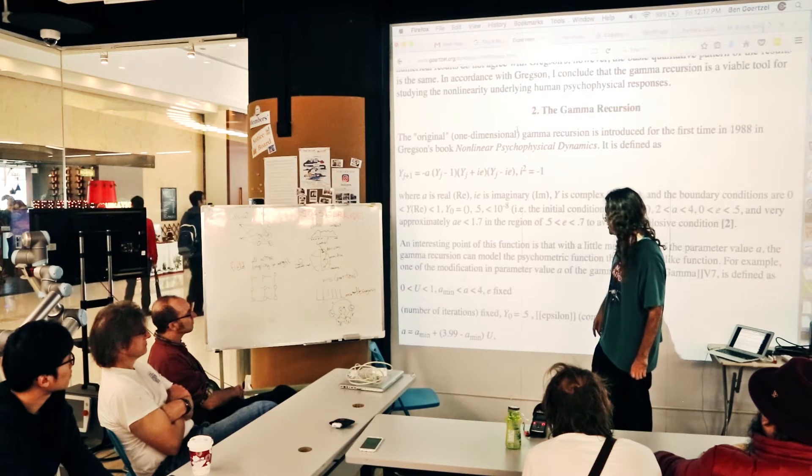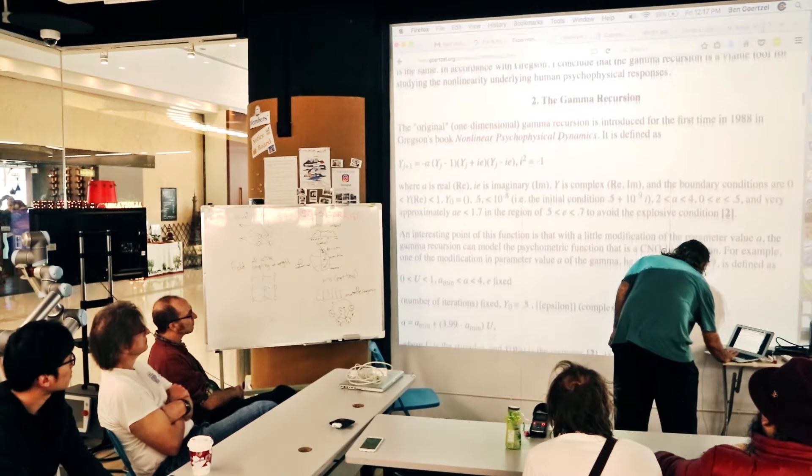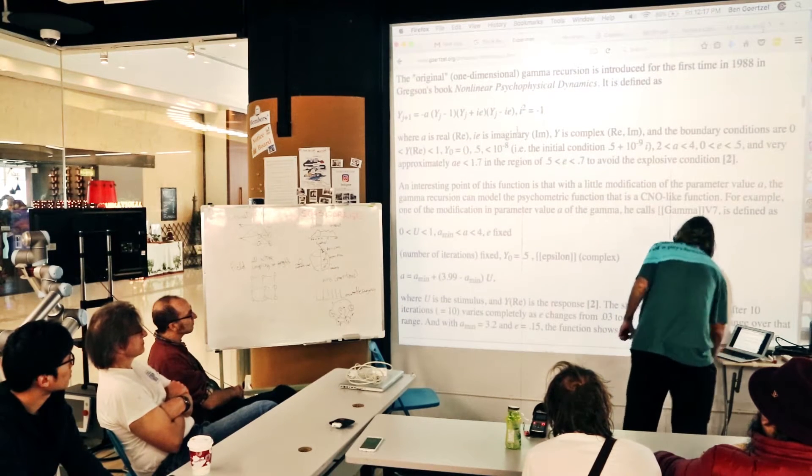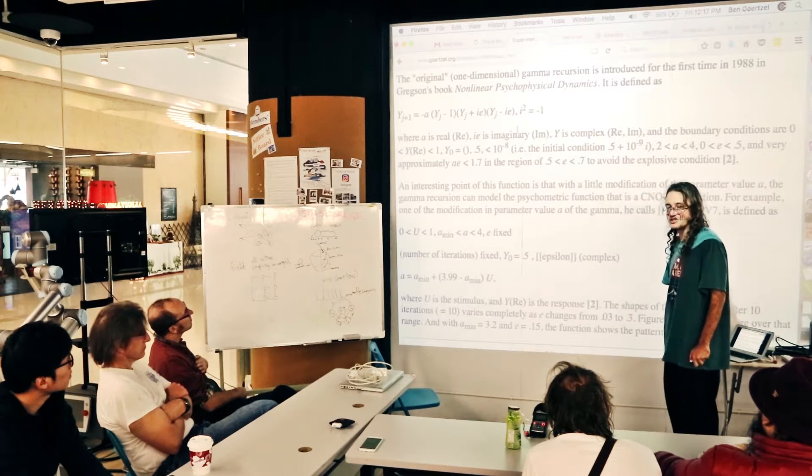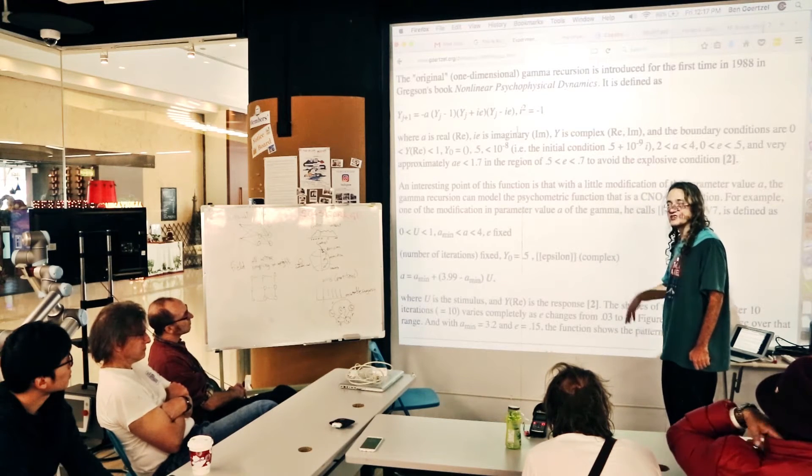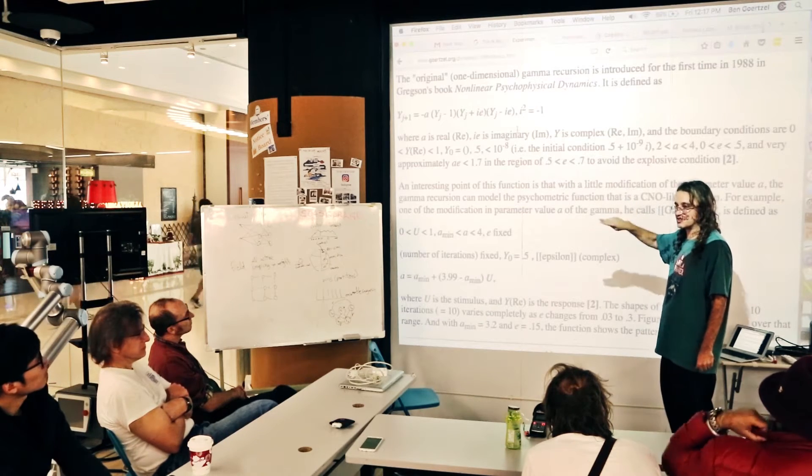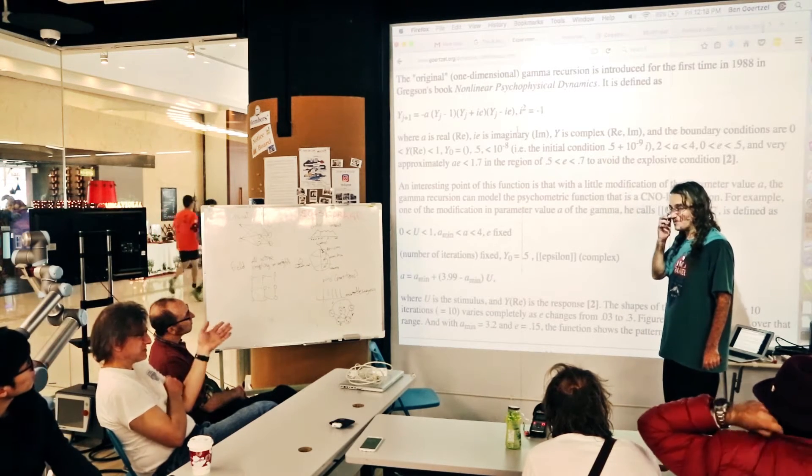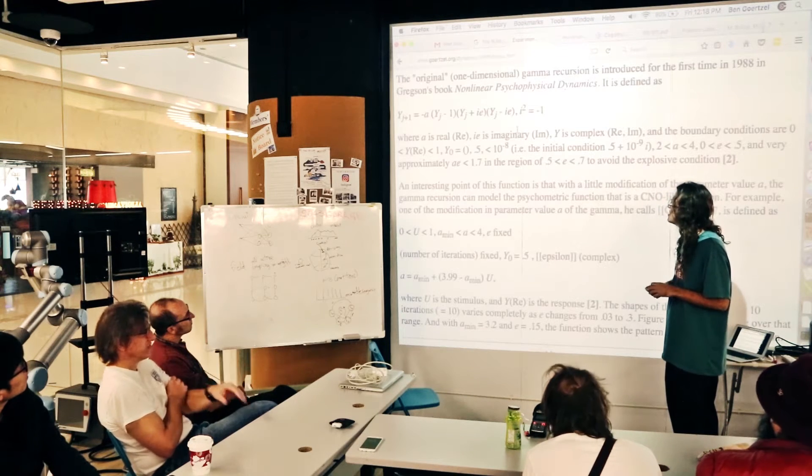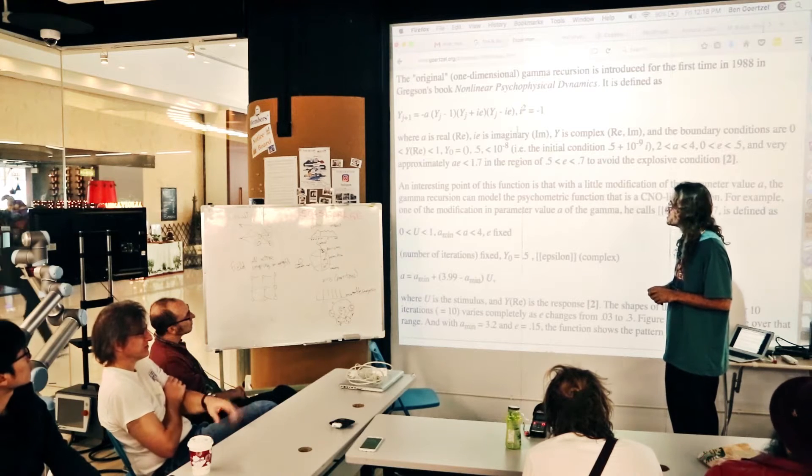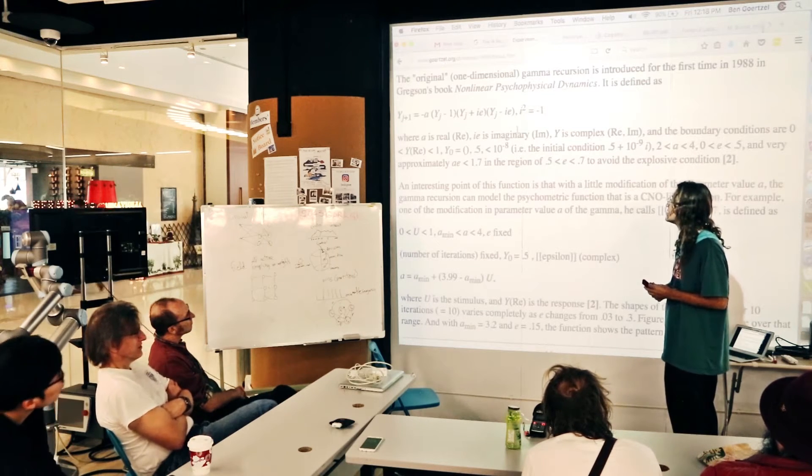It's a little more complicated than the logistic equation, but Gregson had a book called Non-Linear Psychophysical Dynamics where he presented a bunch of equations and simulations. He argued that using this recursion rather than the logistic—I'm saying finite state machine is you can sort of enumerate all of them and see how each different one behaves and say, 'Oh, here are the interesting ones, here are the boring ones.'